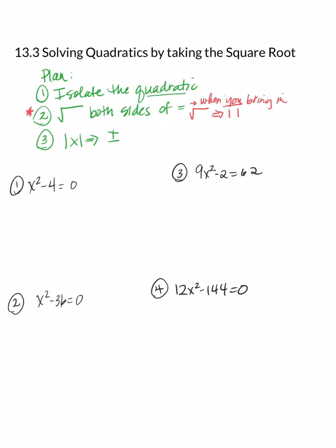Remember the rule: if you take an odd number out of an even index or an even root, you have to put absolute value bars. And when we solved absolute values, we'd set what's inside equal to the negative and to the positive. Instead of doing that, we're taking a shortcut and using the plus or minus symbol to show we're considering both positive and negative. Anytime you do the square rooting, you've got to use plus or minus. When you take the square root of x, you always do plus or minus.